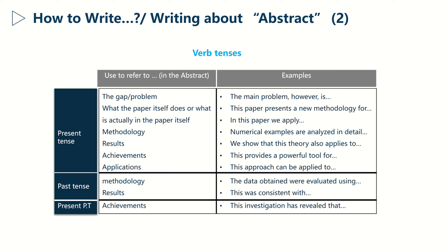The last verb tense is the present perfect tense, which is generally used to express achievements. For example: 'This investigation has revealed that...' To illustrate all of this, let's take a look at these examples.